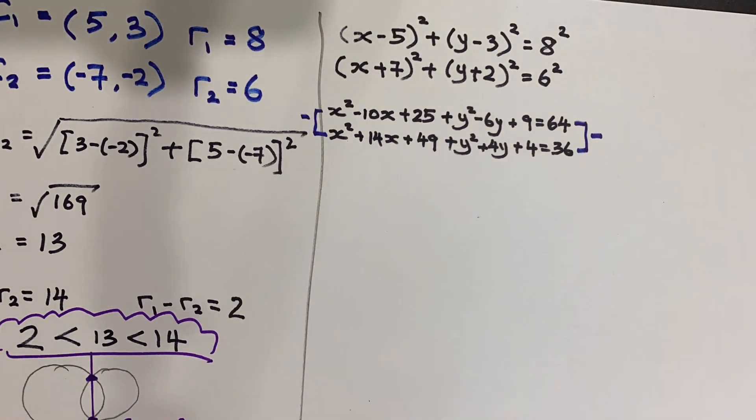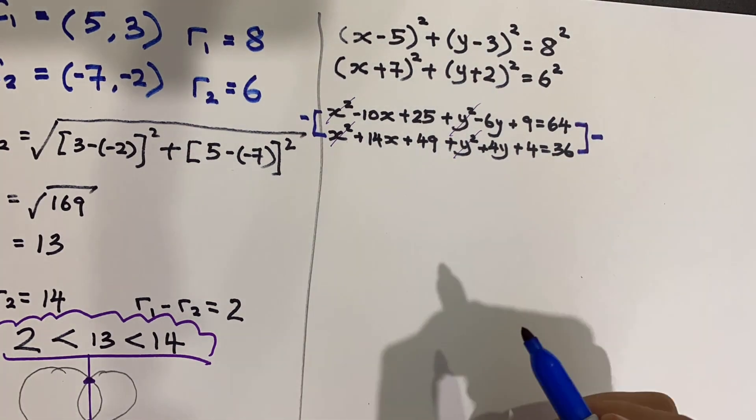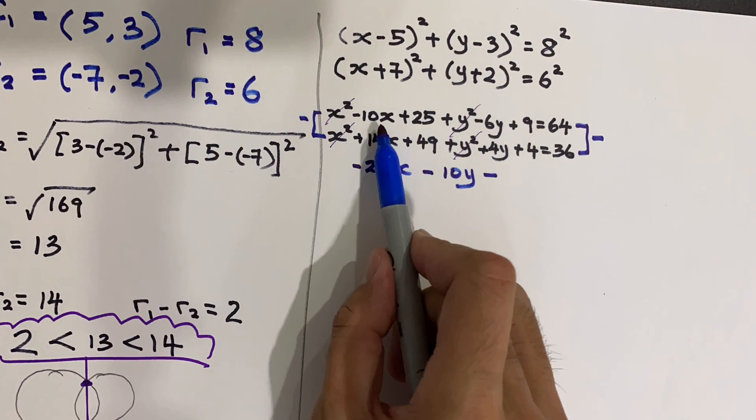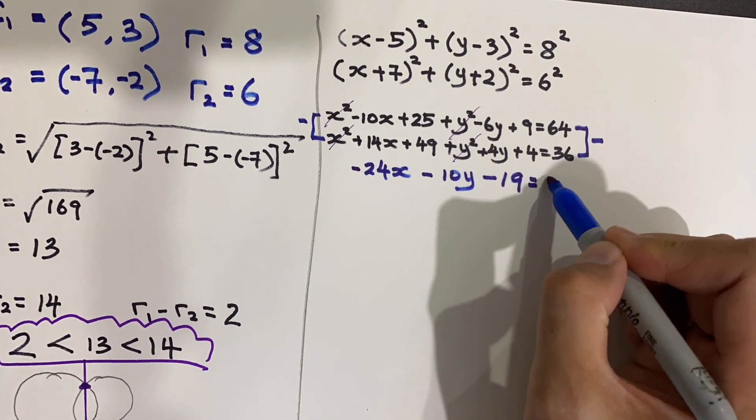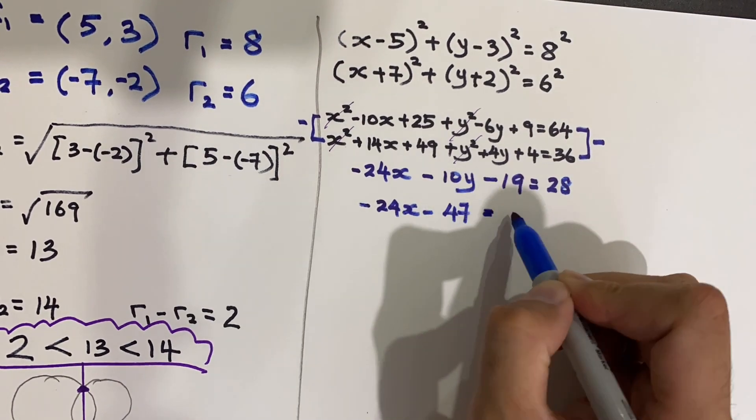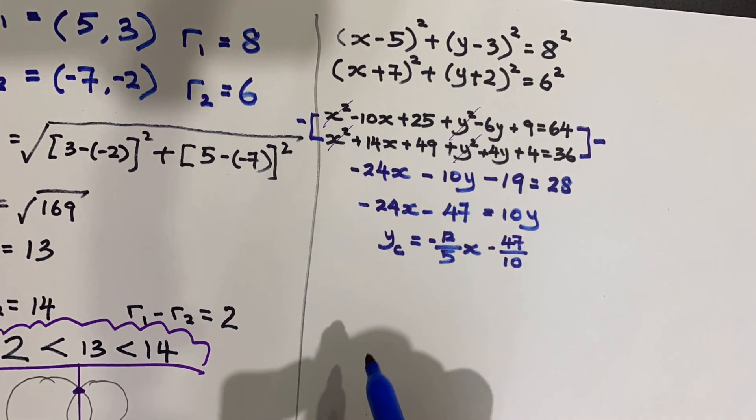So this is how it looks like. When I expand these two equations, the x squared will be removed. And you should realize there's no xy term. There will not be xy terms for equations of circles. So when I subtract these two equations, this is what I will get. I get a linear line because it's going to be a common chord. Then rearrange it so that I will get y equals mx plus c format.